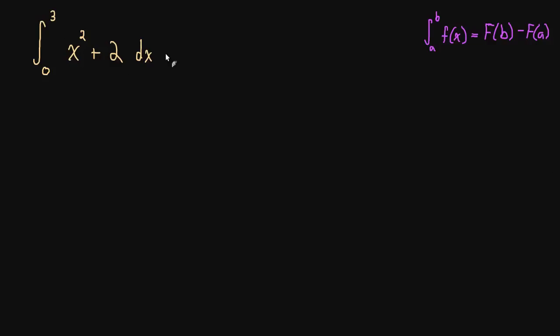So how are we going to do this? Well, first of all, we need to find the antiderivative or an antiderivative of x squared plus 2. So x squared, we know how to do that. That's just x cubed over 3. And an antiderivative of 2 is just 2x. And in the last video, we discussed why we don't need to add plus c because the plus c's are just going to cancel. So we add this vertical bar to remind us where we need to plug in some numbers. We're not done yet.